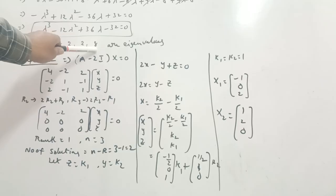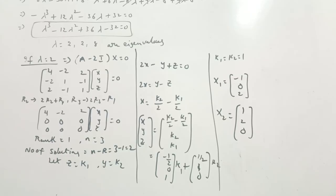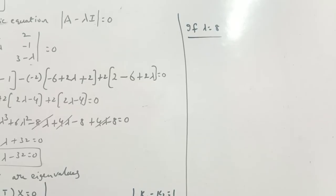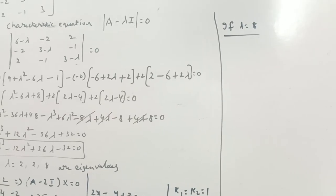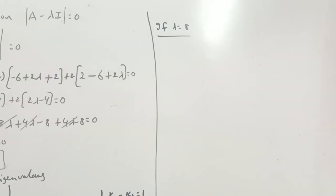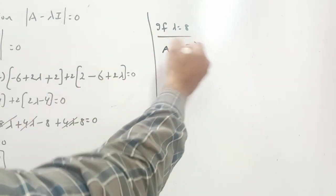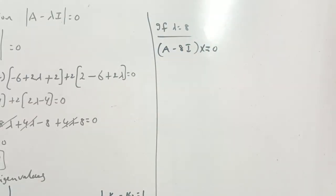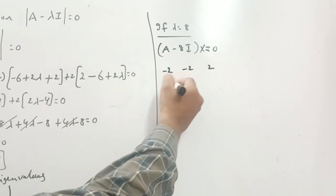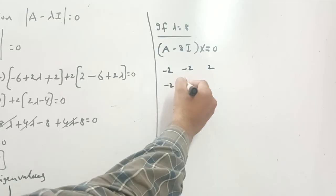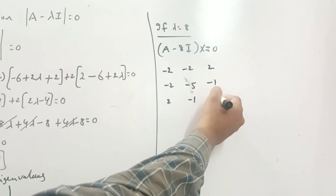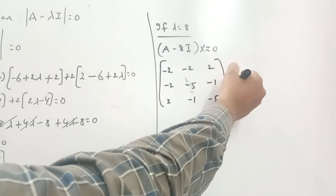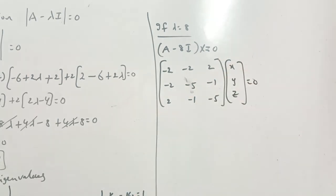Now for lambda equals 8, we find the third eigenvector. Substituting lambda equals 8 into (A - 8I)X = 0, we get: [6-8, -2, 2; -2, 3-8, -1; 2, -1, 3-8] times [x, y, z] = 0, which gives [-2, -2, 2; -2, -5, -1; 2, -1, -5] times [x, y, z] = 0.